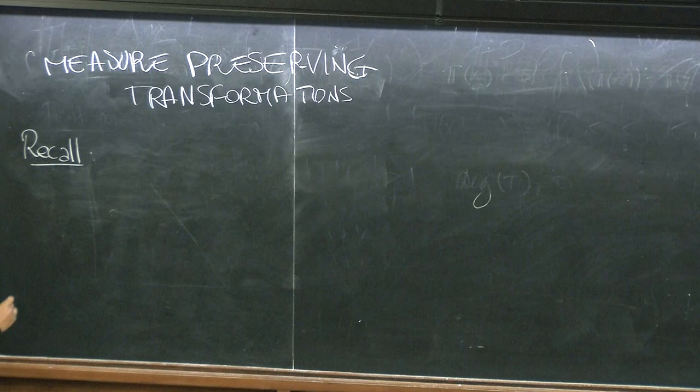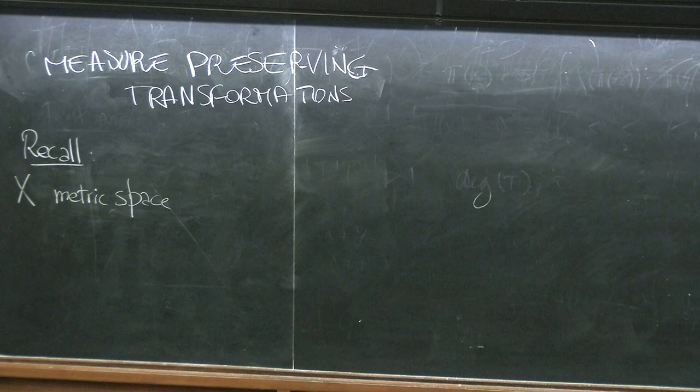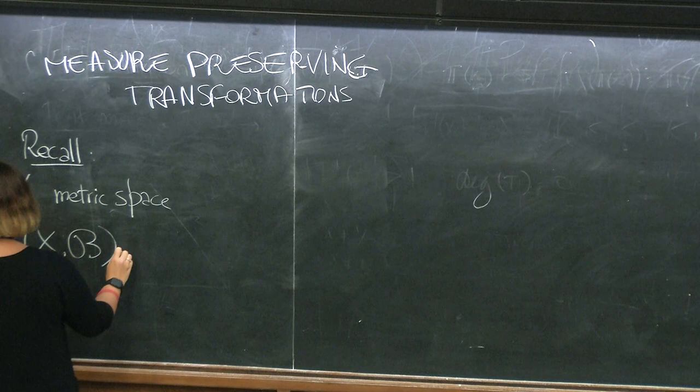So X for me will always be a metric space, or it could also be a topological space for most of the things I'll say, and most of the time it will be either [0,1] or S¹ or the things we have been looking at so far. So from yesterday we know that (X, B) is a measurable space.